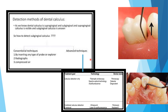Regarding detection of dental calculus: subgingival calculus is very hard to detect as it is not visible clinically. It can be identified by conventional techniques as well as advanced techniques. Conventional techniques include careful probing by tactile sensation, radiographs, and compressed air. Advanced techniques include fiber optic endoscopy, ultrasound, laser, and autofluorescence.